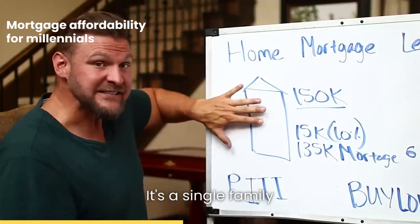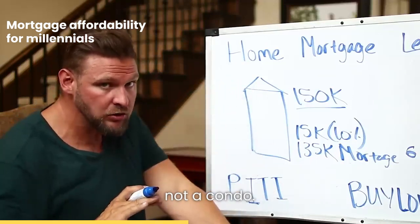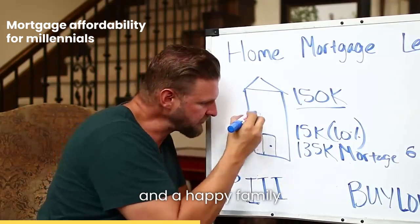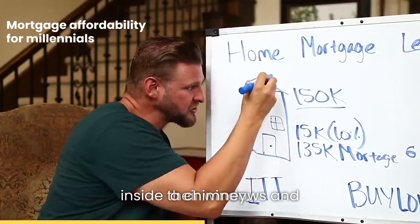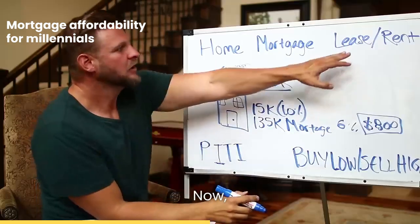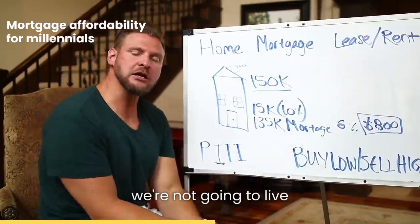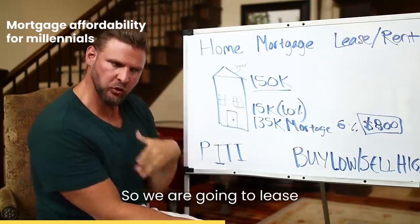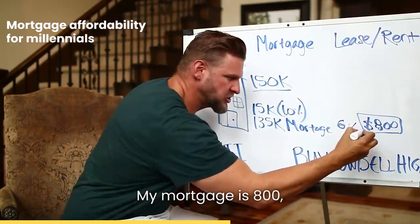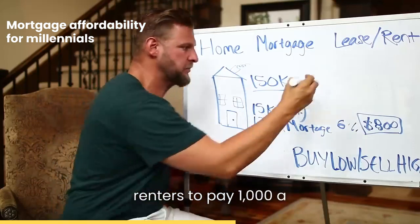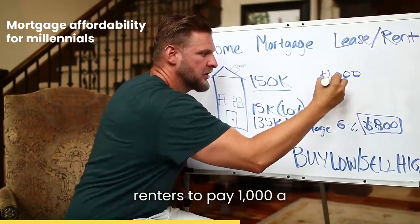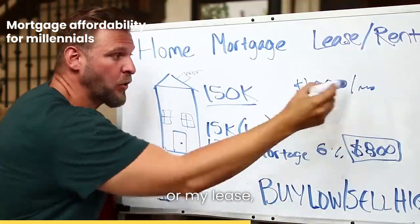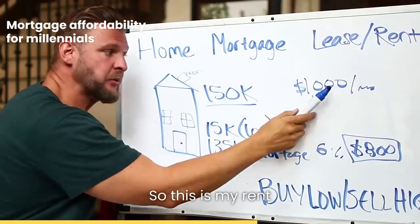We've got a home. It's a single-family home — not a duplex, not a condo, not a triplex or multifamily. It's just a home with one door and a happy family inside. Now let's say you have this home and you decide you're not going to live there — you're going to rent it out. Another word for rent is lease. So you are going to lease the home. Your mortgage is eight hundred dollars but you might get your renters to pay a thousand dollars a month.